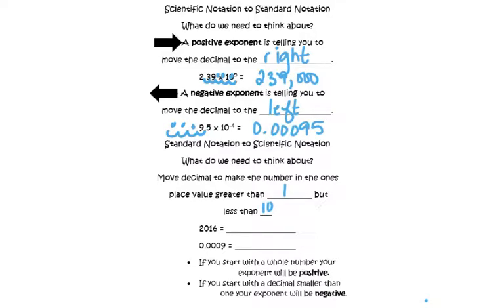So for 2016, the decimal's right here. So I want to move that where the digit in the one's place is between 1 and 10. So I would move it to the right of the two, and I moved it three spots, so I would tack on times 10 to the third.